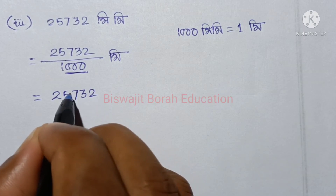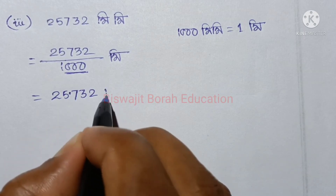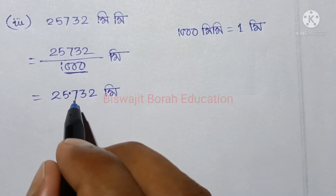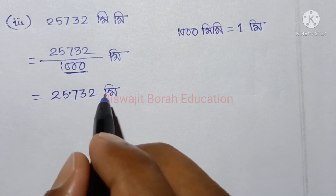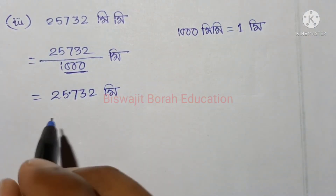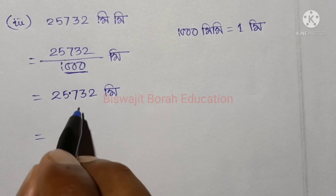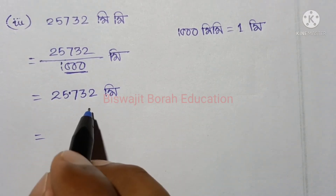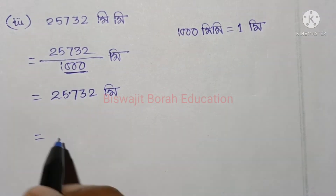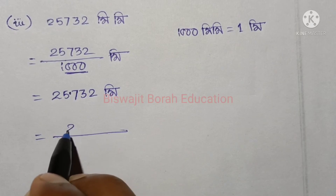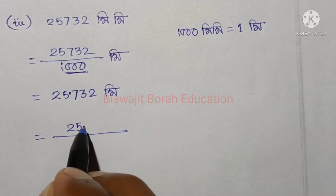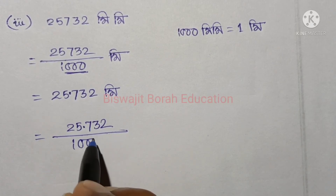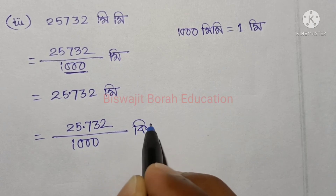So 1,000 meters, then 25,732 meters. So that gives us 20,000 meters as the next result.